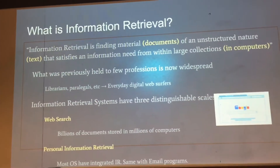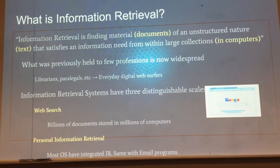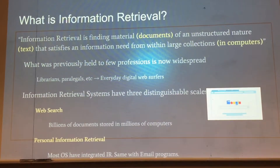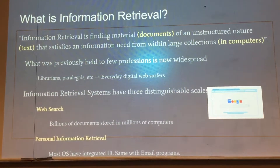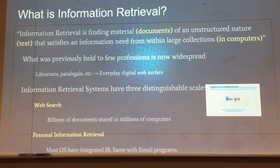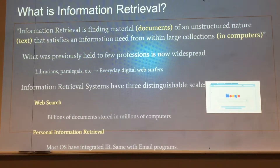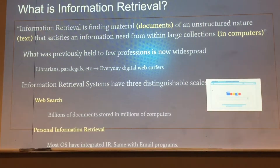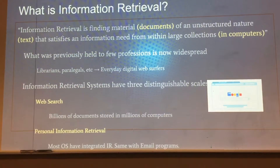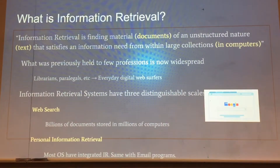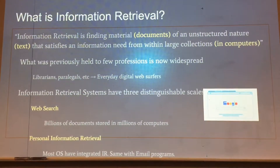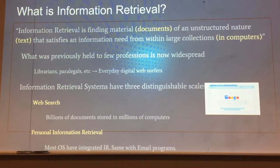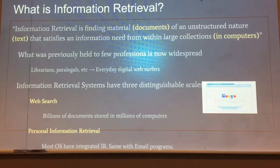All right, and to start things off, I'm just going to give a brief overview of what information retrieval actually is as the foundation of everything. Academically, it's defined as: information retrieval is finding material of unstructured nature that satisfies an information need from within large collections. This is typically documents within text, usually stored on computers. It previously helped just a few professions — librarians, paralegals, professional researchers — but this has since moved to pretty much every single person every day with the development of web browsers and the large amount of information we have stored.